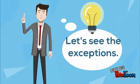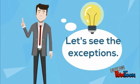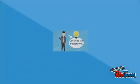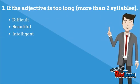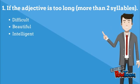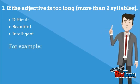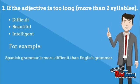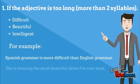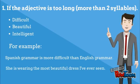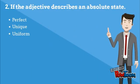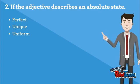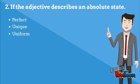Now we are almost done, so let's see the exceptions. First, if the adjective is too long — more than two syllables — then you cannot use the '-er' or '-est' endings; you must use 'more' and 'most.' For example: 'Spanish grammar is more difficult than English grammar,' or 'She is wearing the most beautiful dress I have ever seen.' Second, if the adjective describes an absolute state, like 'perfect,' 'unique,' and 'uniform,' you cannot use comparatives and superlatives.